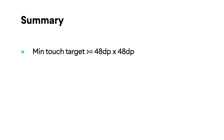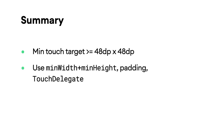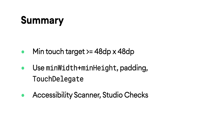To summarize: you should strive to make all interactive elements at least 48 dp high and 48 dp wide. You can do this by setting Android minWidth and minHeight, by adding padding, or by installing a TouchDelegate. You can use Android Studio's issues panel warnings and automated testing tools like Accessibility Scanner to detect small touch targets. Thanks for listening and stay tuned for more accessibility videos.